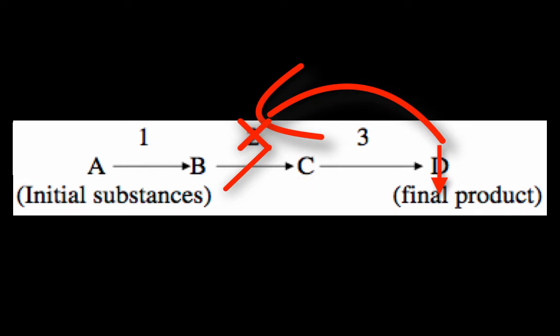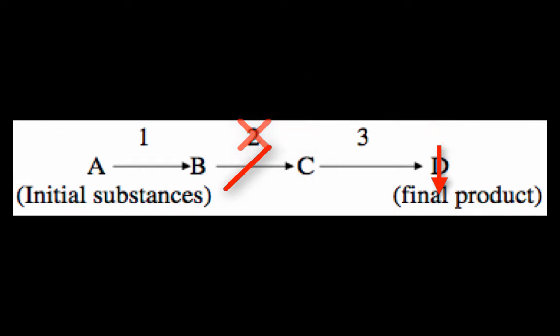As the concentration of product D decreases, its inhibitory effect on enzyme 2 will diminish, and the enzymatic production of products C and D will increase once again.